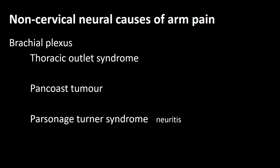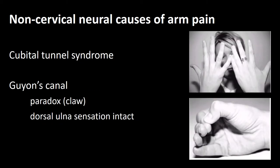In addition, viral conditions such as Parsonage-Turner syndrome can cause brachial plexus neuritis with a variety of pain and motor fallout. The ulnar nerve may be affected around the elbow in cubital tunnel syndrome, presenting with ulnar distribution sensory changes and some weakness in the ulnar-innervated muscles. This can be identified by tapping around the elbow, especially with the elbow flexed at about 120 degrees. The ulnar nerve may also be trapped in Guyon's canal at the wrist, with the paradox of the claw due to differential action of the intrinsics and long flexors. In this case, the dorsal ulnar sensation is intact because the nerve branch comes out before Guyon's canal.